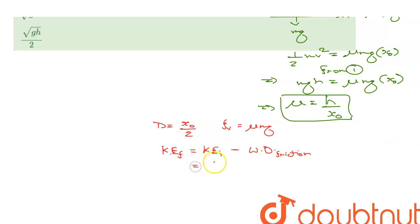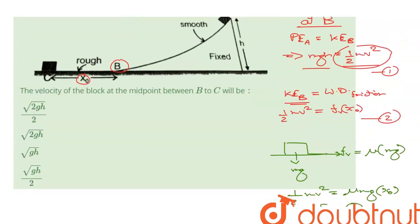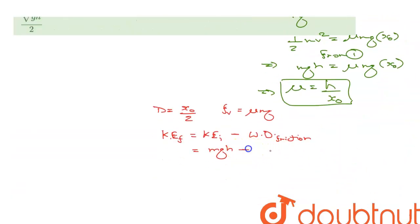Initial kinetic energy can be written as Mgh from equation 1, minus the work that was done against friction. So the force of friction mu Mg times the displacement x0 by 2 is equal to 1/2 Mv squared. M gets cancelled.